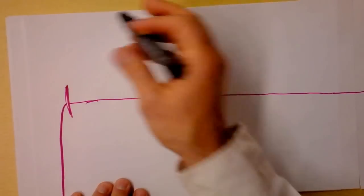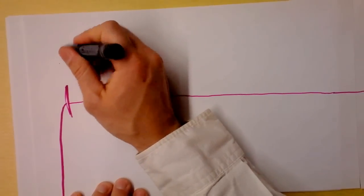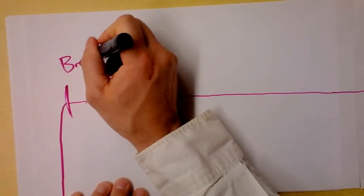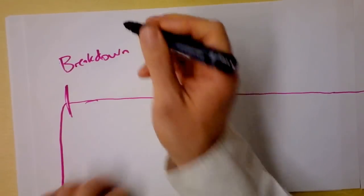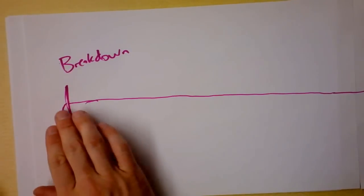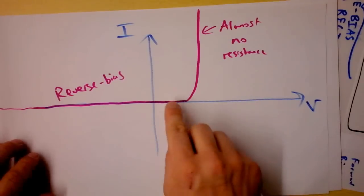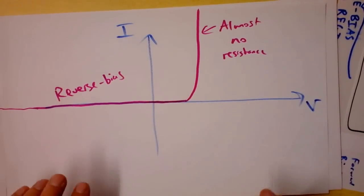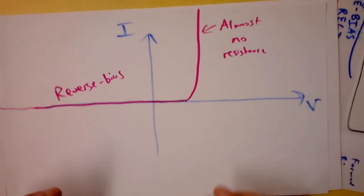but at some point you reach a very large breakdown voltage. And then current begins to flow the other direction. But this is often dozens of volts, whereas our go-through voltage is maybe half a volt or one volt or something like that, because of the built-in potential.